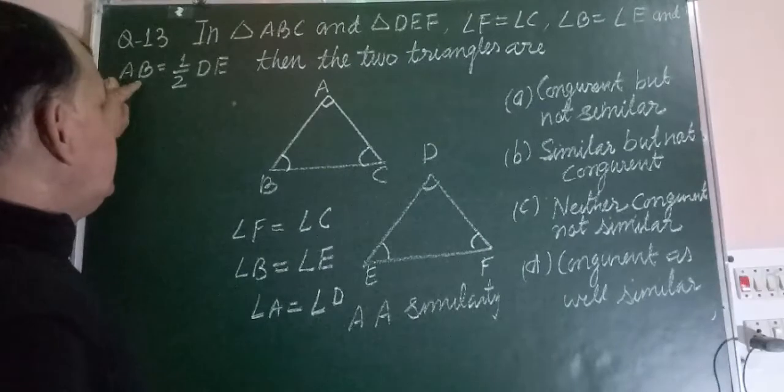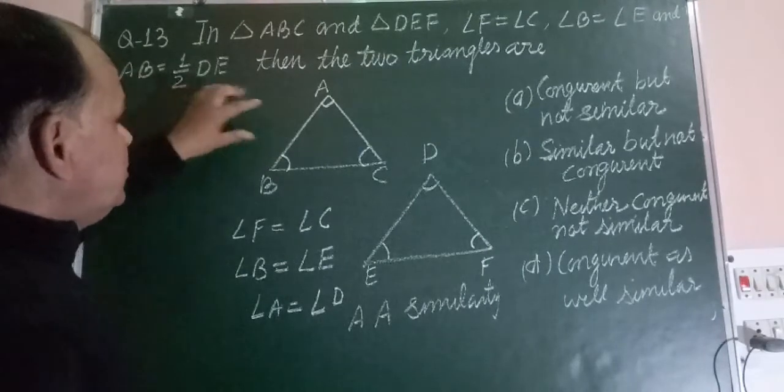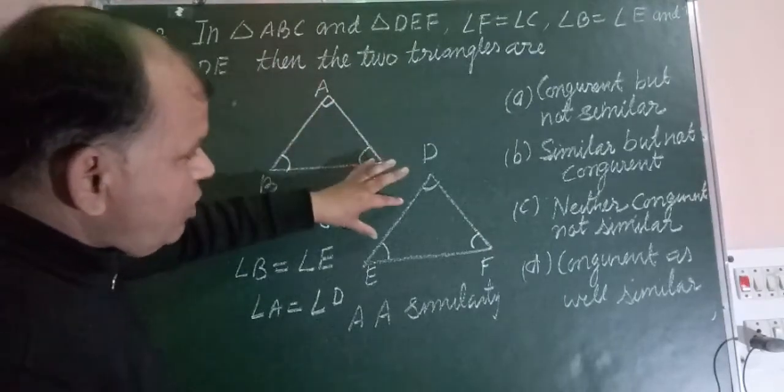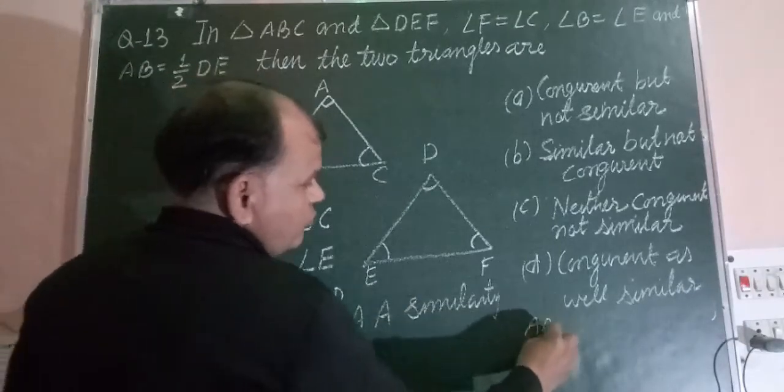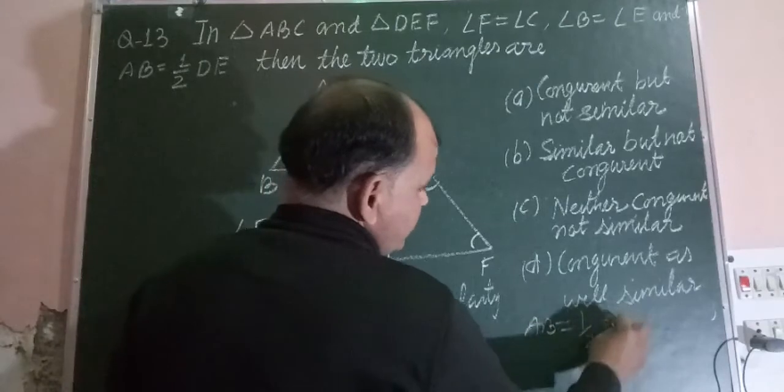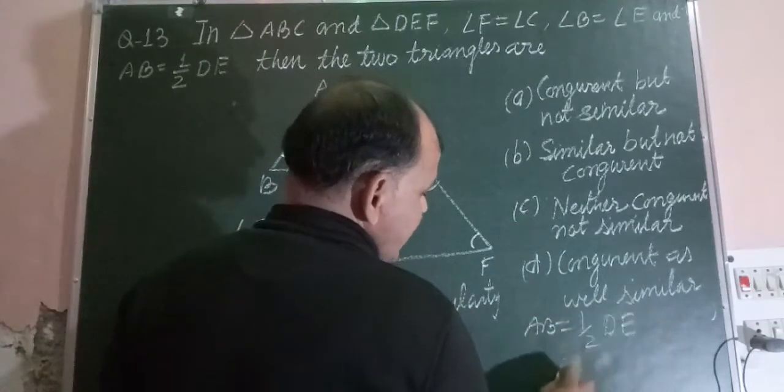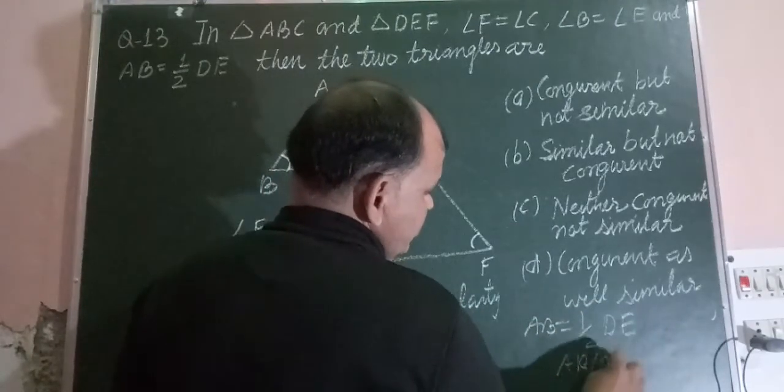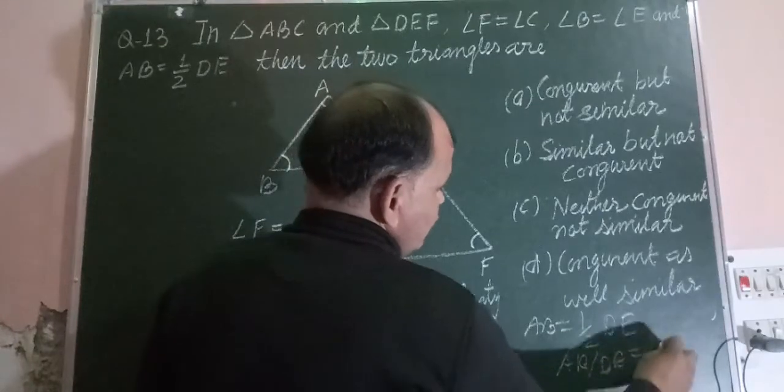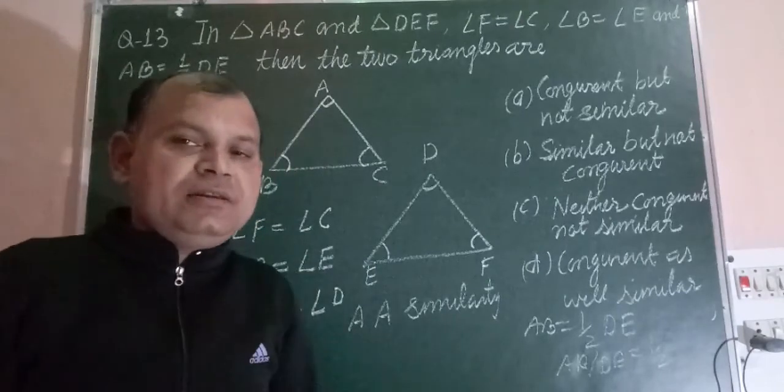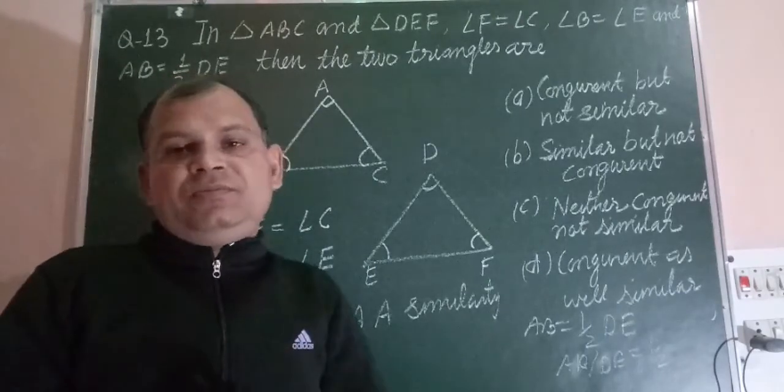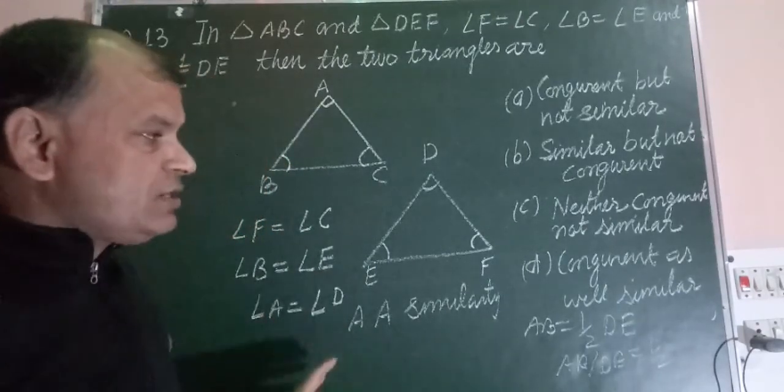Now AB equal to half of DE, so the sides AB upon DE has common ratio 1 by 2. So sides of similar triangles are in a fixed ratio, so these are similar.